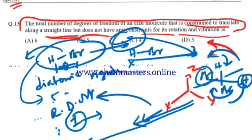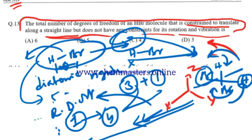For a rigid diatomic molecule, we have 3 translational motions and 1 rotational motion, which leads to a total of 4 degrees of freedom.